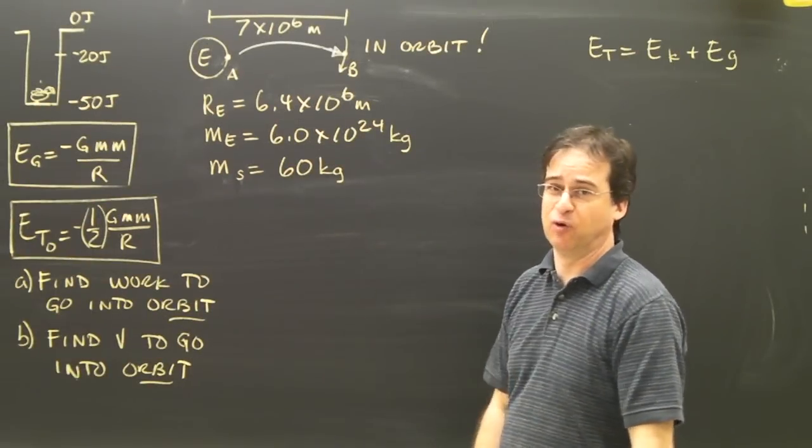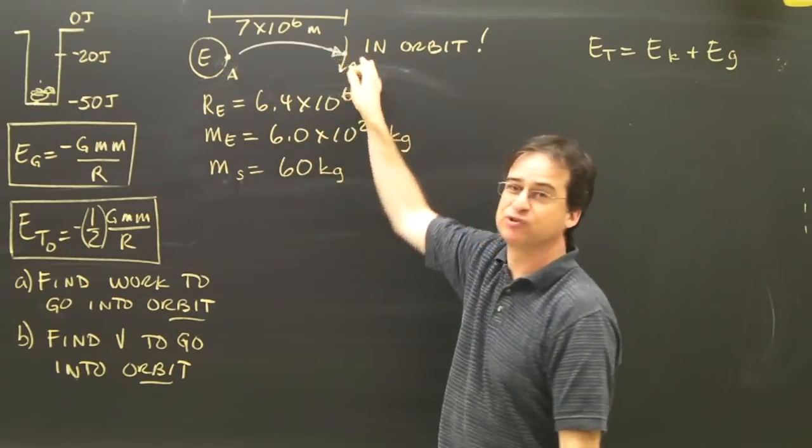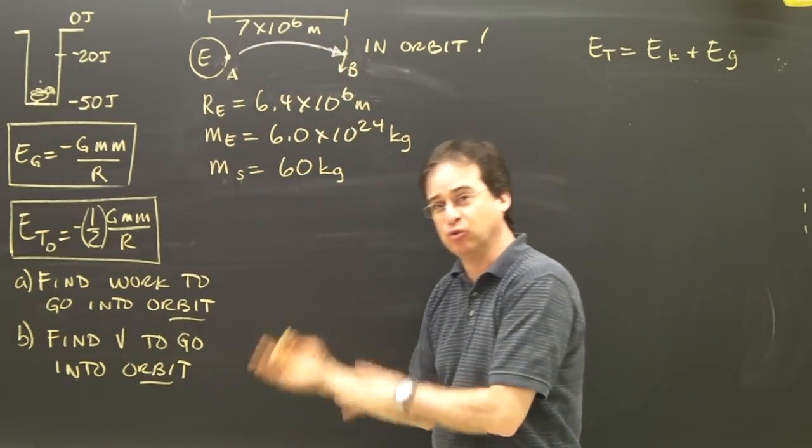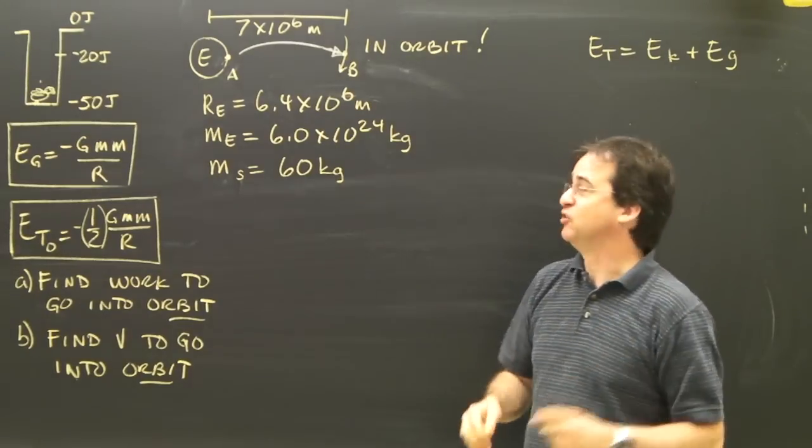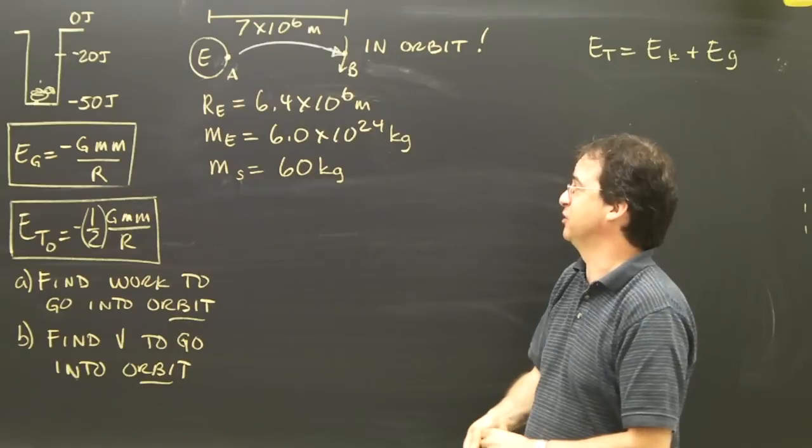Now we're going to look at something that is in orbit. And as I said, if an object is taken from the surface of the Earth up to a certain height but it's not in orbit, you do it one way. When it's in orbit, you have to do it a different way. Is it any more complicated? No, it's actually sometimes a bit easier.